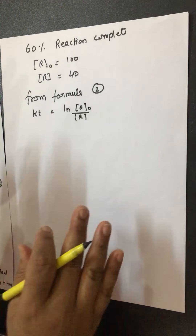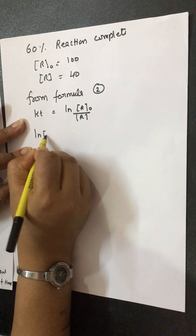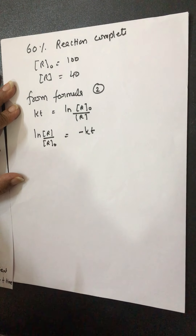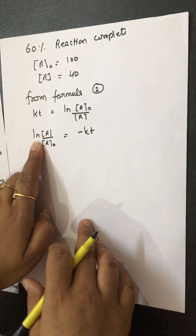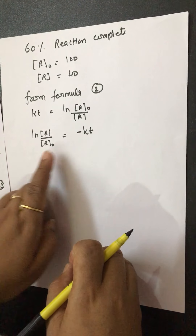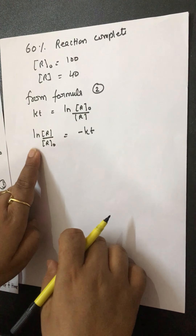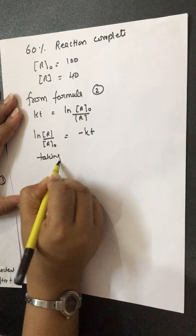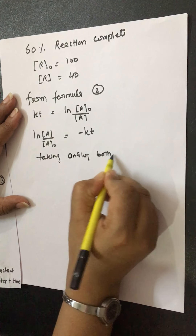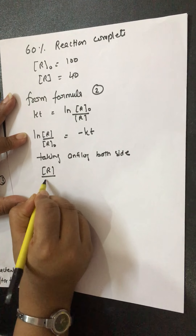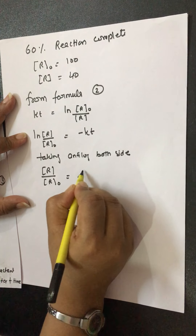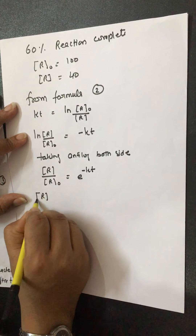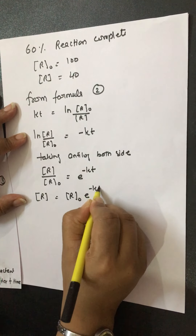From formula 2, kt equals ln R₀ over R, which can also be written as ln R over R₀ equals minus kt. To remove the ln (log base e), take the anti-log of both sides. Taking anti-log cancels the ln, giving R over R₀ equals e to the power minus kt, so R equals R₀ · e to the power minus kt.